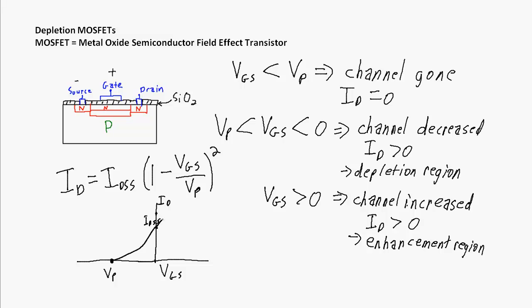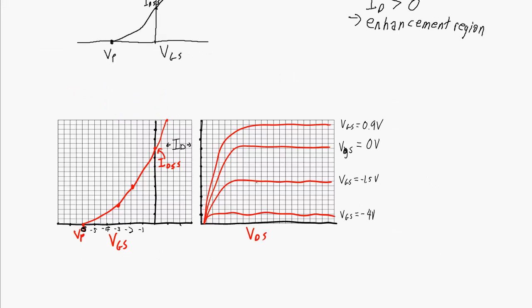But what's going to happen? As VGS gets greater than zero, we can still keep increasing ID. You can see in this area, above IDSS, ID increases quite rapidly for changes in VGS.